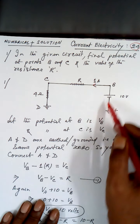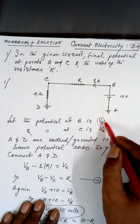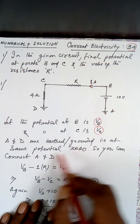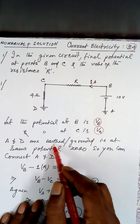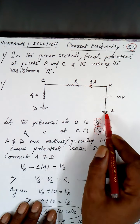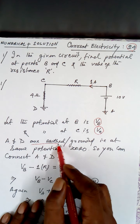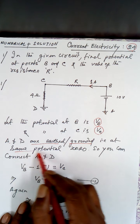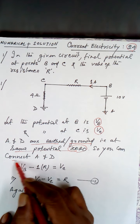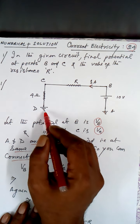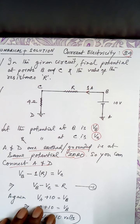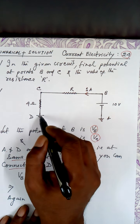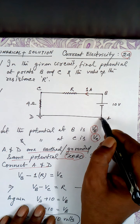Let the potential at B be VB, and the potential at C be VC. Points A and D are earthed — also called grounded — meaning they are at the same potential, zero. So you can connect A and D; there is no harm in connecting them because they are at the same potential.